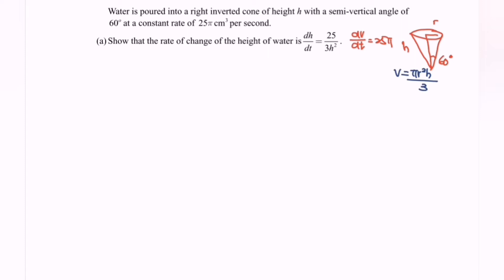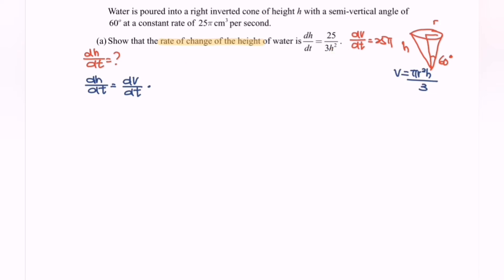We are interested in the rate of change of the height, meaning dh/dt. The first step is to extract the info from the question and list up the formula. The second step is to write the chain rule, where dh/dt equals dV/dt multiplied by dh/dV. We are going to express the formula V in terms of h, then differentiate V with respect to h.